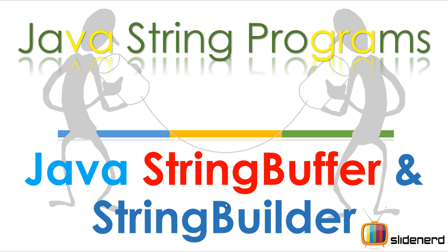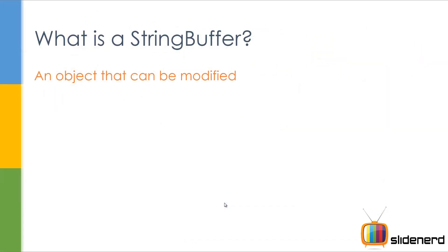Now if you're a beginner in Java, you probably saw this somewhere and wonder what it means. A String Buffer is an object that can be modified. Can a String be modified? No, you cannot. It will look like it is getting modified, but every time you do something, it's going to give you a new object. Like if something is in lowercase, say 'Hi', and you change it to full caps — that gives you a new object. But in String Buffer, that's not the case. It gives you the same object and modifies it.